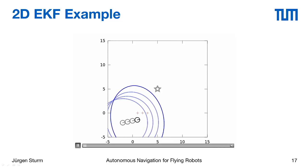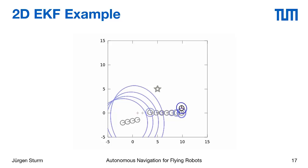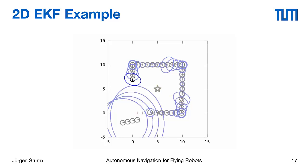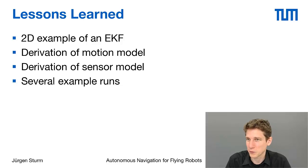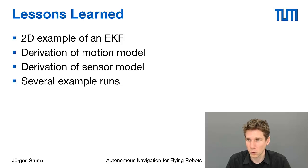One last example: again with wrong initialization, but now the marker is located in the middle. Whenever the robot comes close enough it sees the marker and can reduce its uncertainty. To summarize today's video: we gave a 2D example of the extended Kalman filter, showed all steps in the derivation of the motion model, constructed and derived the sensor model, and discussed several example runs illustrating how the Kalman filter manages uncertainty and corrects from observations.